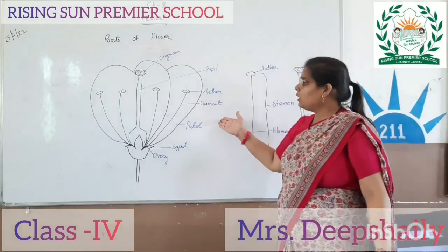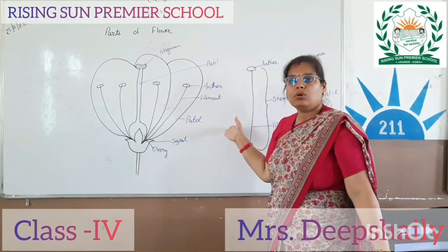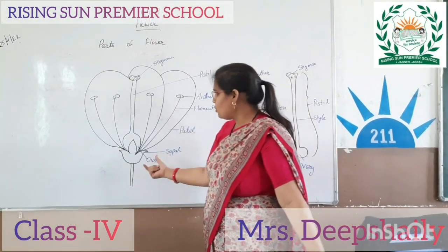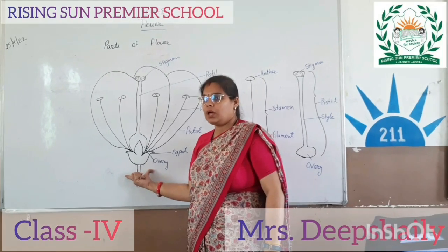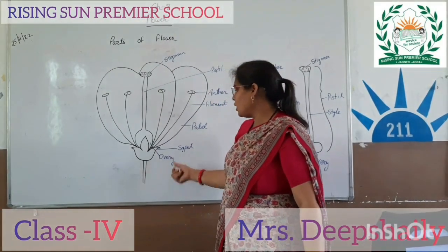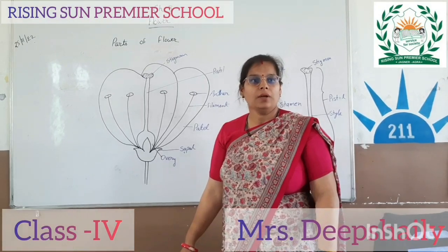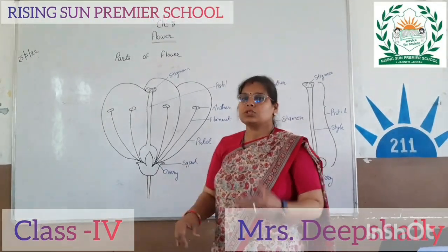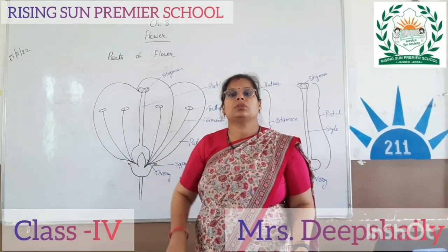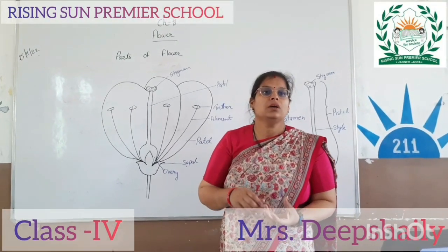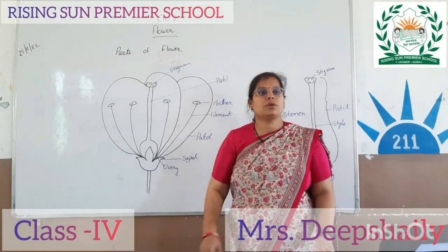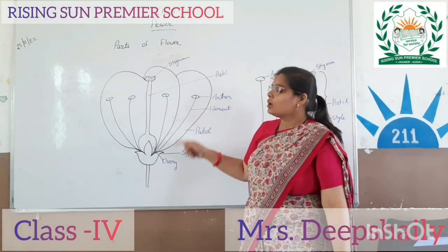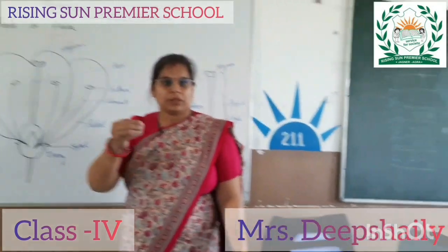We will start to see the different parts of flowers. The green part of the flower is called the sepal. Under the flower, the colorful part is the petal.